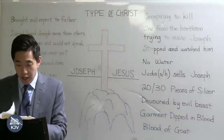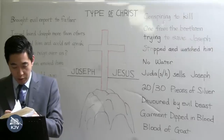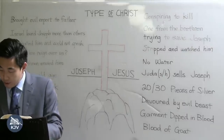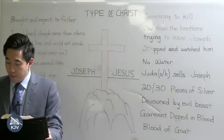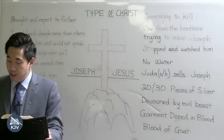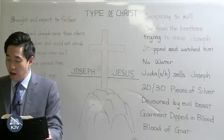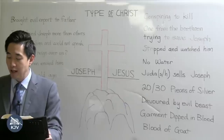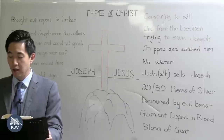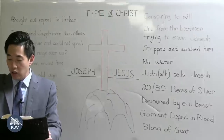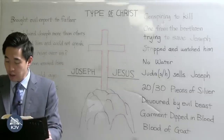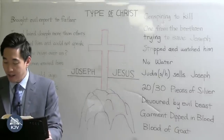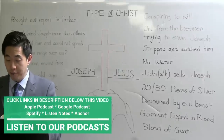This matches Luke chapter 20, verse 13: the wording in Genesis 37 is that when the son is on his way to them, they plot to kill him. Luke 20:13: 'Then said the Lord of the vineyard, What shall I do? I will send my beloved son, and maybe they will reverence him when they see him. But when the husbandmen saw him, they reasoned among themselves saying, This is the heir, come let us kill him.'